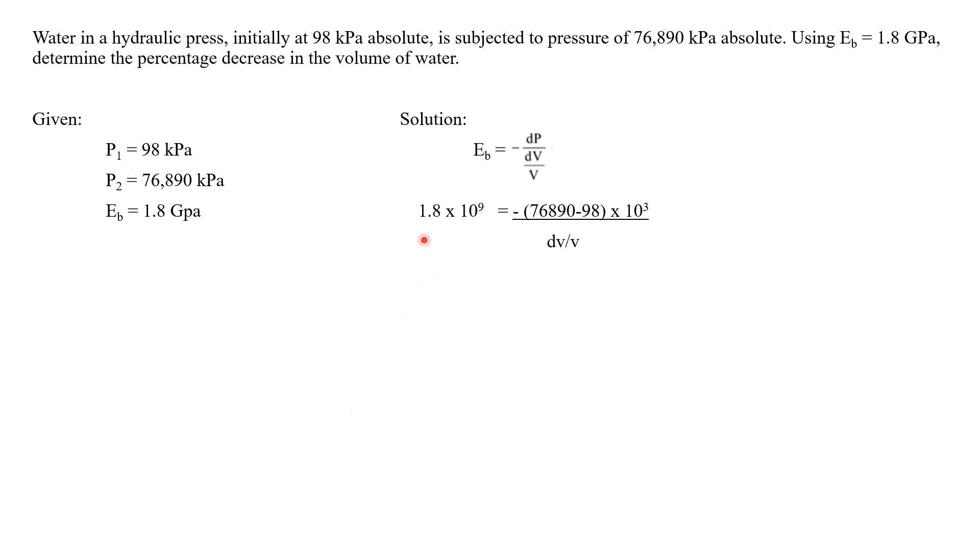E_D is equal to 1.8 times 10 raised to 9. We need to multiply by 10 raised to 9 to convert GPa into Pa.